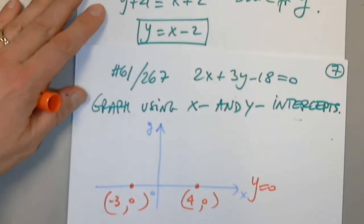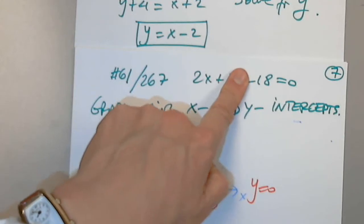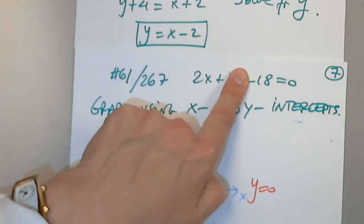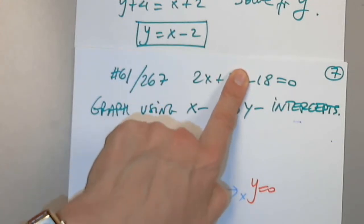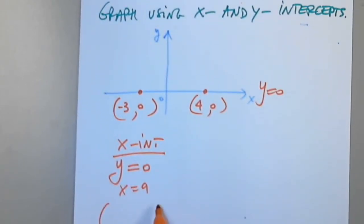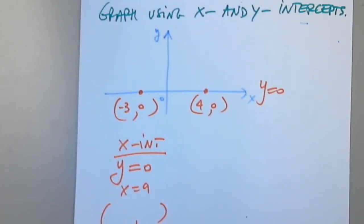I cover the y term — it's gone. How much is x? Don't forget, you have to move negative 18 to the other side and divide by 2. X equals 9. What is the ordered pair that we just determined as being the x-intercept? It's 9 comma 0.